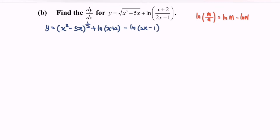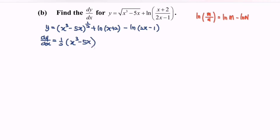Next, we are going to differentiate the situation with respect to x. So dy/dx is equal to 1 over 2, bracket, x cubed minus 5x, to the power of negative 1 over 2.